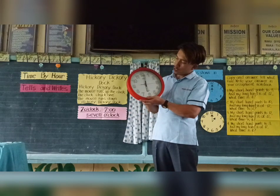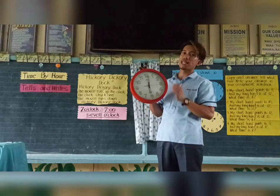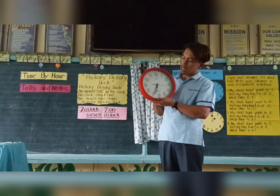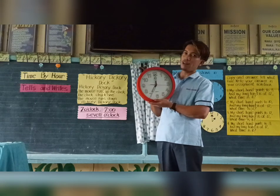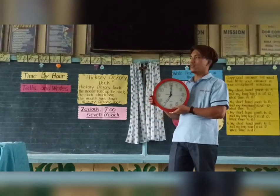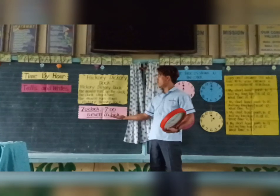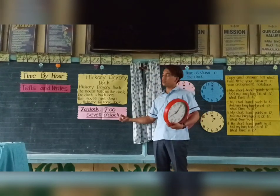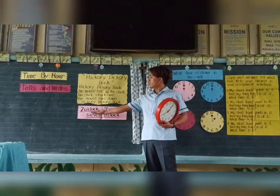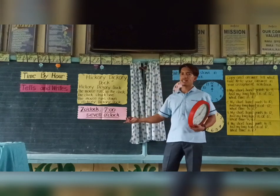A while ago it was pointing on six, and when we move the long hand one full rotation, it becomes seven o'clock already. So how do you write seven o'clock — in words, in decimal, or in number of digits?